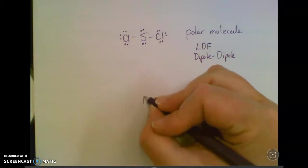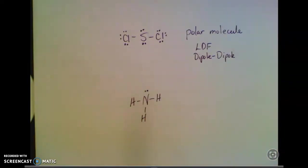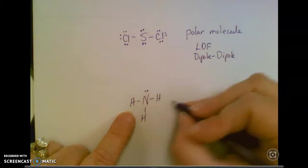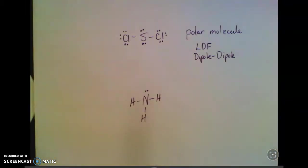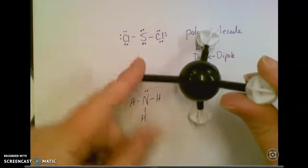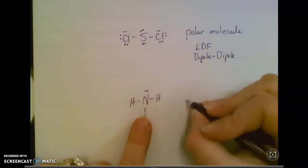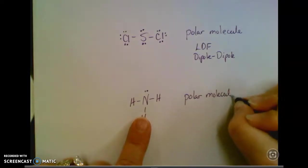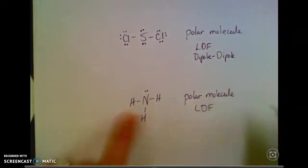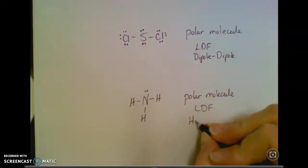And one more, if I have ammonia. There is its structure. It's going to be a trigonal pyramidal molecule. Hydrogen, hydrogen, hydrogen. And then I've got this end here with the unshared pairs. So it's not evenly distributed. I've got this end that's different. So it's definitely a polar molecule. It still always has LDF. But this one, because I've got hydrogen bonded with nitrogen, it's that especially strong dipole force. So instead of just dipole-dipole, I'm going to call this one hydrogen bonding.